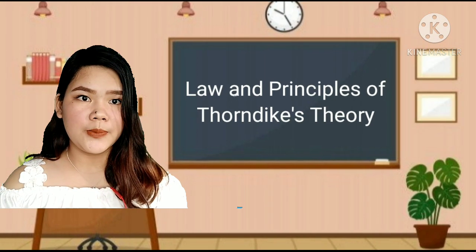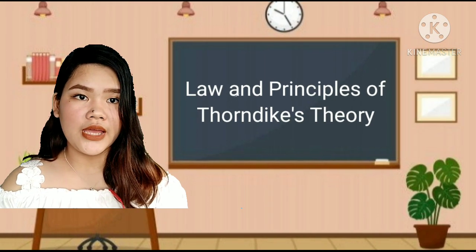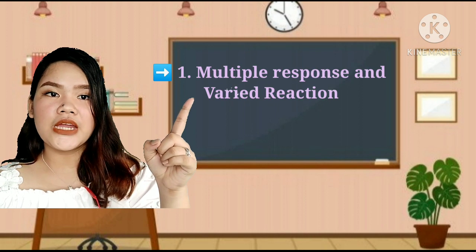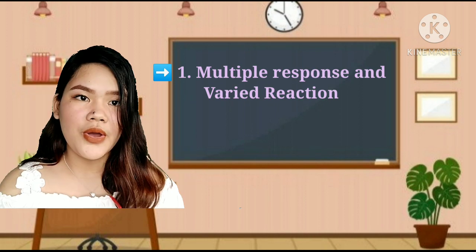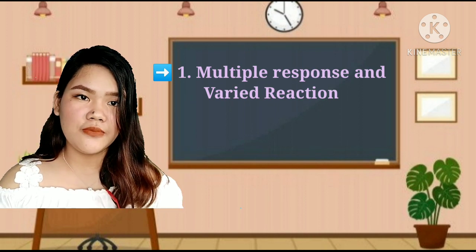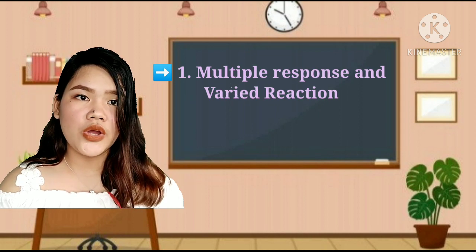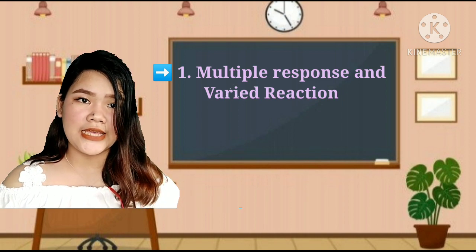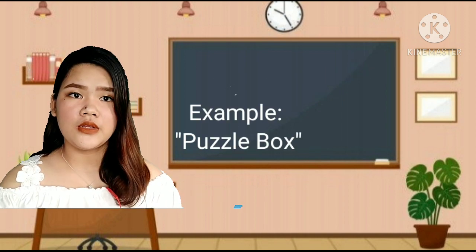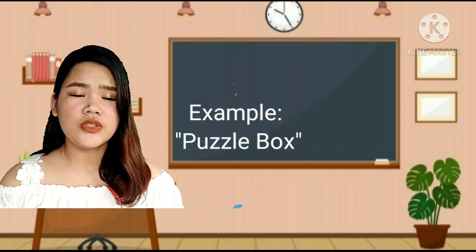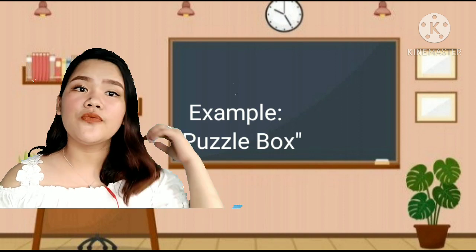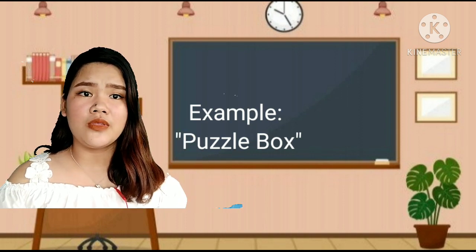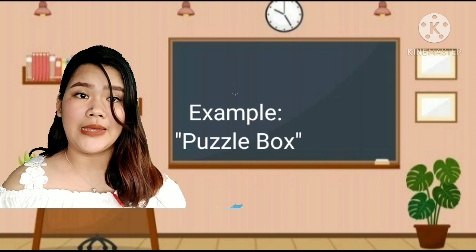Additional laws and principles of Thorndike's learning theory. First, multiple response and varied reaction: when faced with a problem, an animal will try one response after another until it finds success. To solve a puzzle, one should try different ways rather than doing the same thing without any improvement.